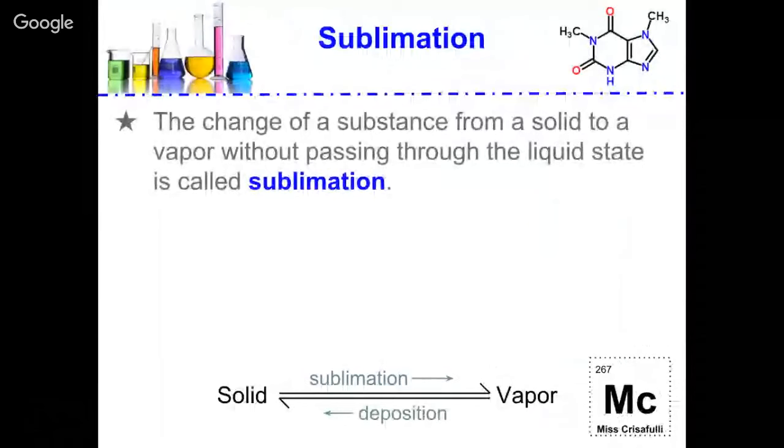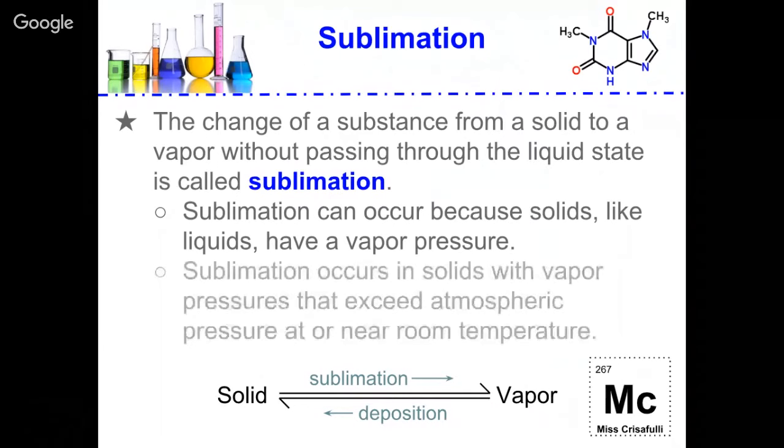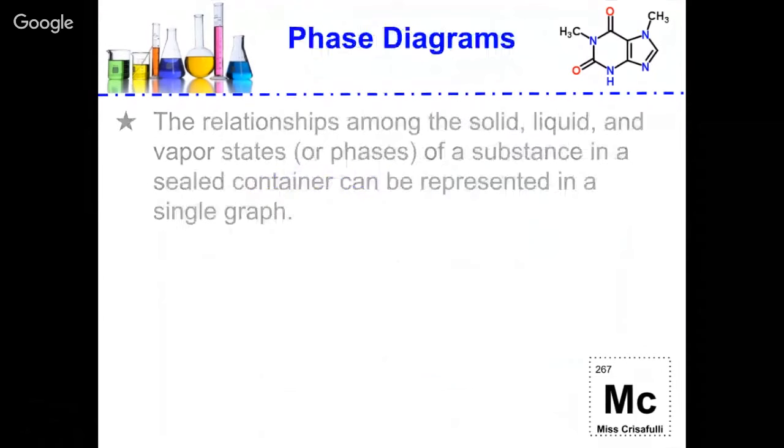Let's first talk about sublimation. The change of a substance from a solid to a vapor without passing through the liquid state is called sublimation. Sublimation can occur because solids, like liquids, have a vapor pressure. Sublimation occurs in solids with vapor pressures that exceed atmospheric pressure at or near room temperature. From a solid going to a vapor is called sublimation and the opposite of that is called deposition.